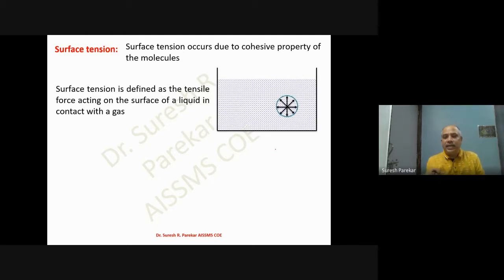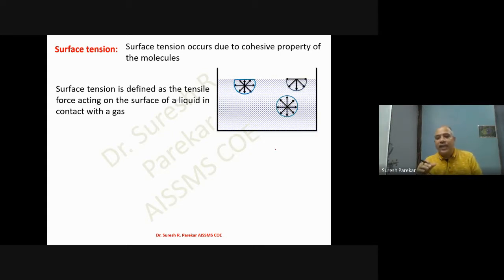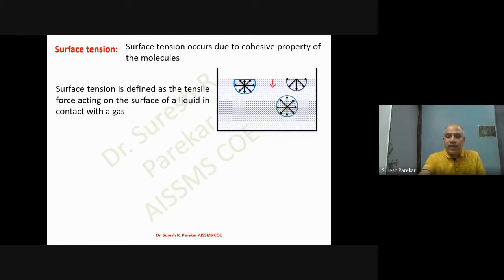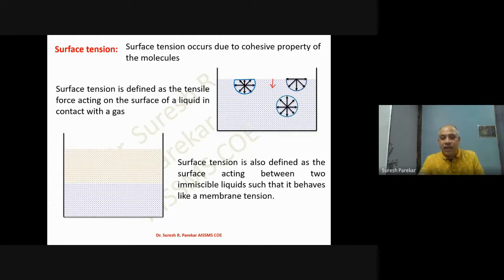If we consider any interior molecule in the water, it experiences forces in all directions that are equal and opposite, so they cancel and there is no resultant force. But if we go towards the surface, molecules have a resultant force — a downward force that is not balanced by an upward force. This develops tension on the surface, known as surface tension. This also occurs between two immiscible liquids where forces are unequal.